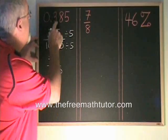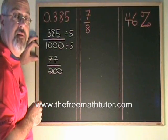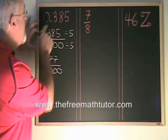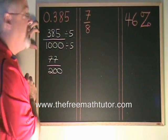Now I'm going to convert the decimal 0.385 into a percentage. The trick to do that is you find your decimal place and you move it two spaces to the right.